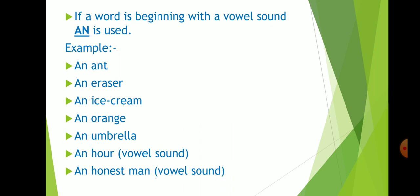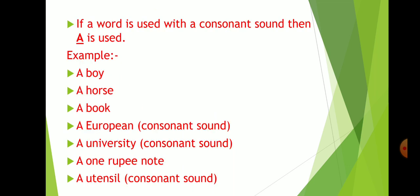Next, if a word is used with a consonant sound, then a is used. For example, a boy, a horse, a book, a European. So, why a European? That is having consonant sound. A university? Having consonant sound. A one rupee note, that is same, a utensil, consonant sound.